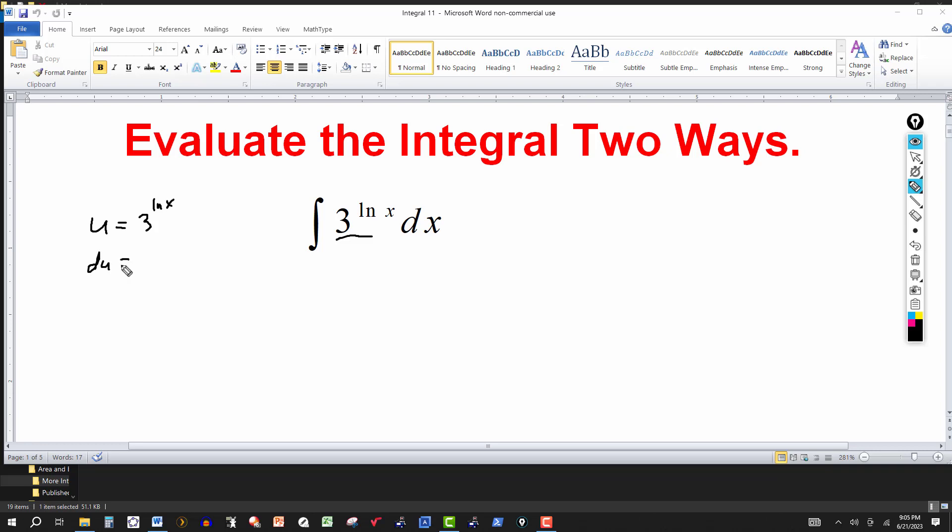So du will equal to, and then the derivative of the exponential is the exponential. You can change the derivative of the exponential. So the derivative of ln x is 1 over x. So this will be times 1 over x. I'm just going to put x here. And this is x. And then v will equal to 1. And I should say dv is equal to 1. So v will equal to x. That's your setup.